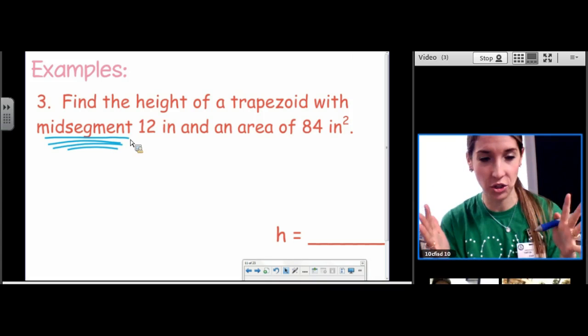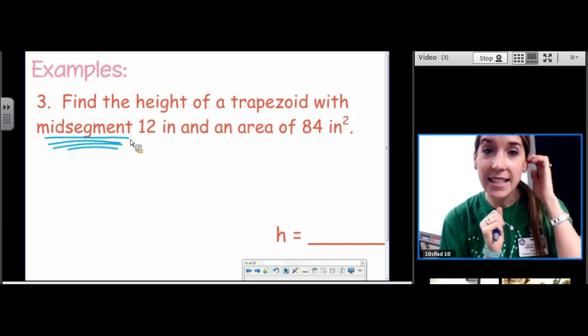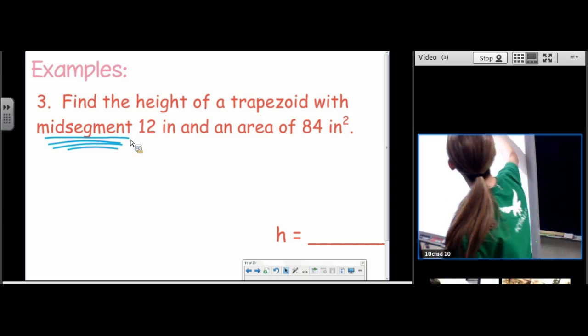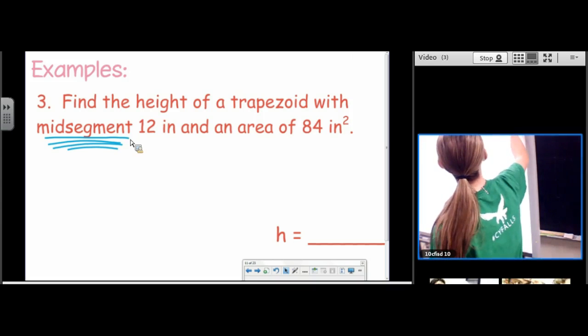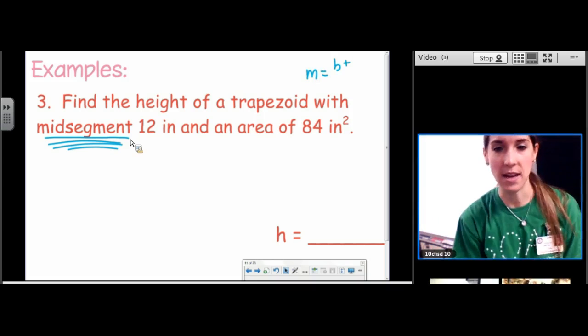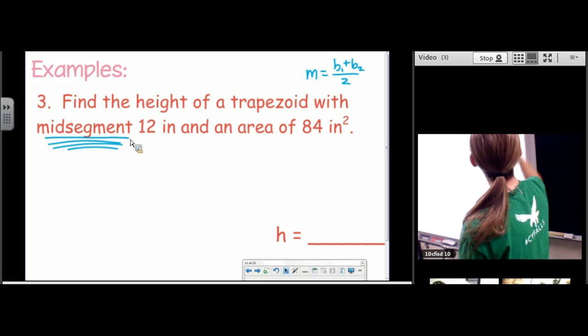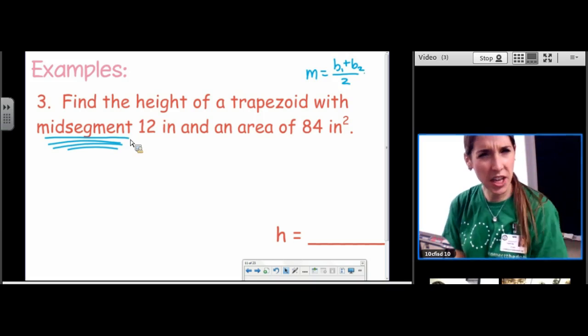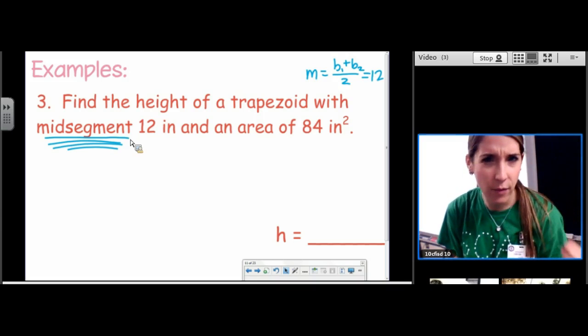Do you remember from last unit the mid-segment of a trapezoid? This was on your quadrilateral family tree. It said a mid-segment. The mid-segment is the average of the bases. Right? That's what a mid-segment is. That equals 12.